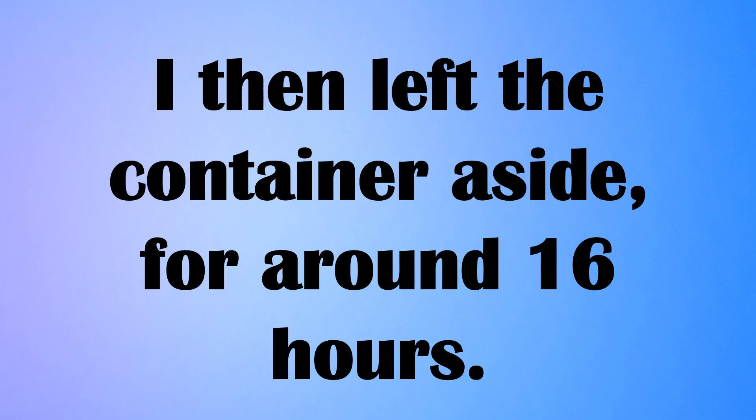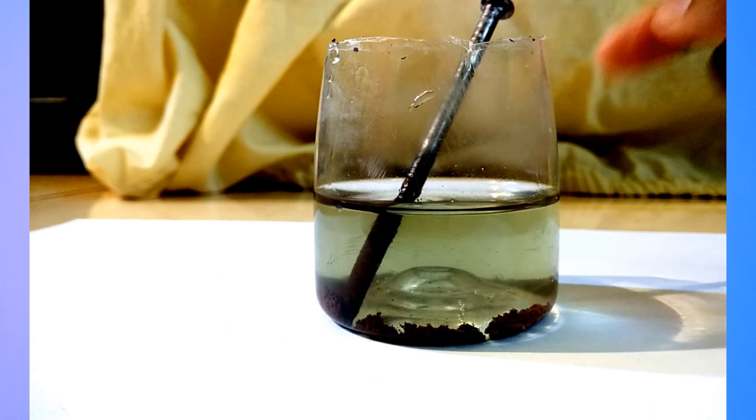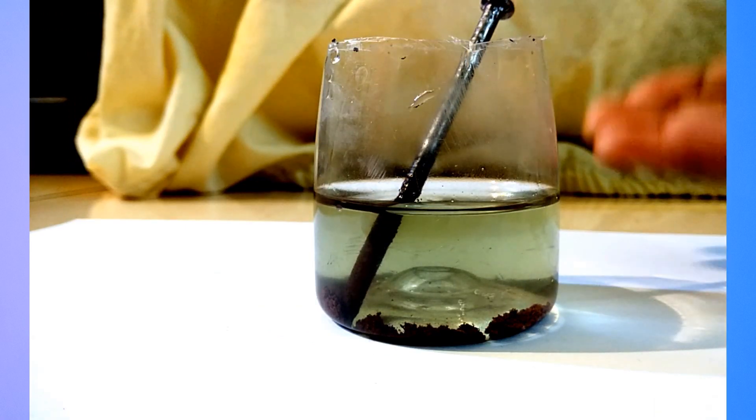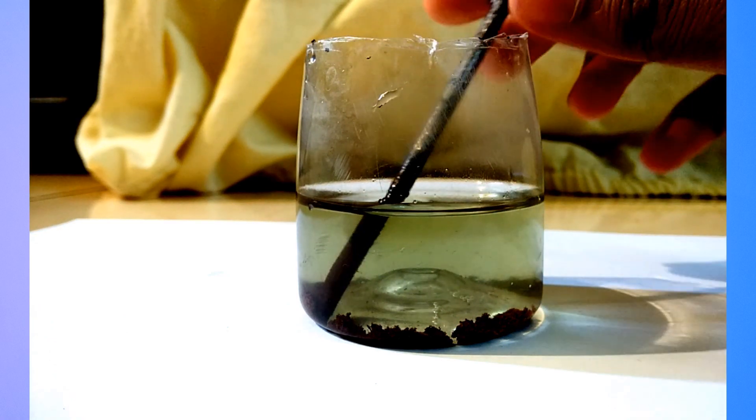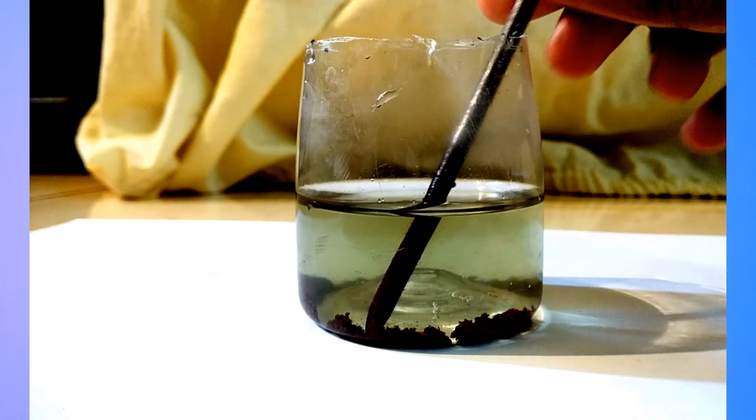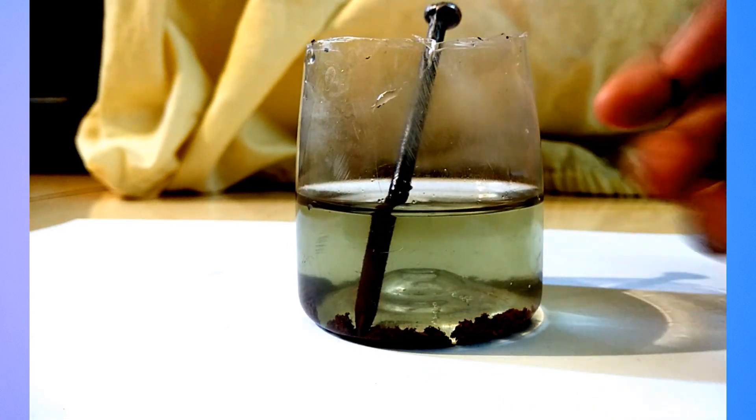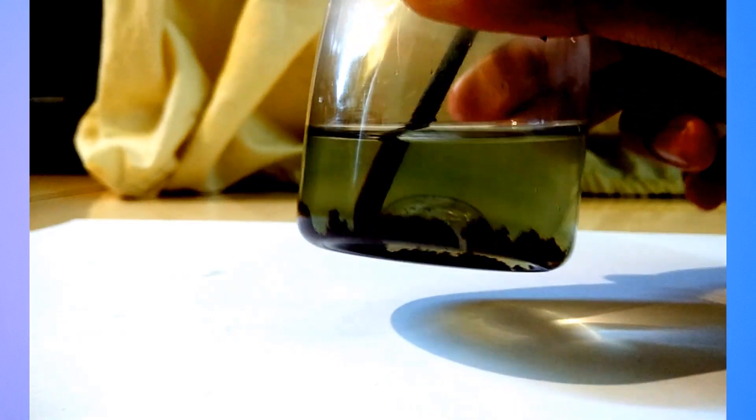I then left the container aside for around 16 hours. After around 16 hours, you can see that the solution has turned into a green colour. There is also a brown colouring in the nail. And some of the flakes which fell from the nail have deposited in the bottom of my container. And they are also brown as you can see.